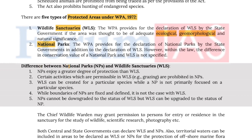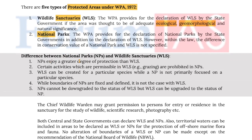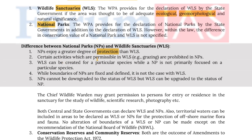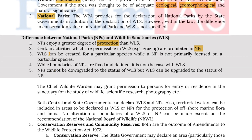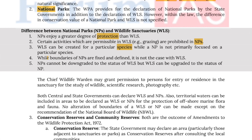National parks enjoy a greater degree of protection than wildlife sanctuaries. Certain activities which are permissible in wildlife sanctuaries, e.g. grazing, are prohibited in national parks. Wildlife sanctuaries can be created for a particular species, while national parks are not primarily focused on a particular species. While boundaries of a national park are fixed and defined, it is not the case with wildlife sanctuaries.